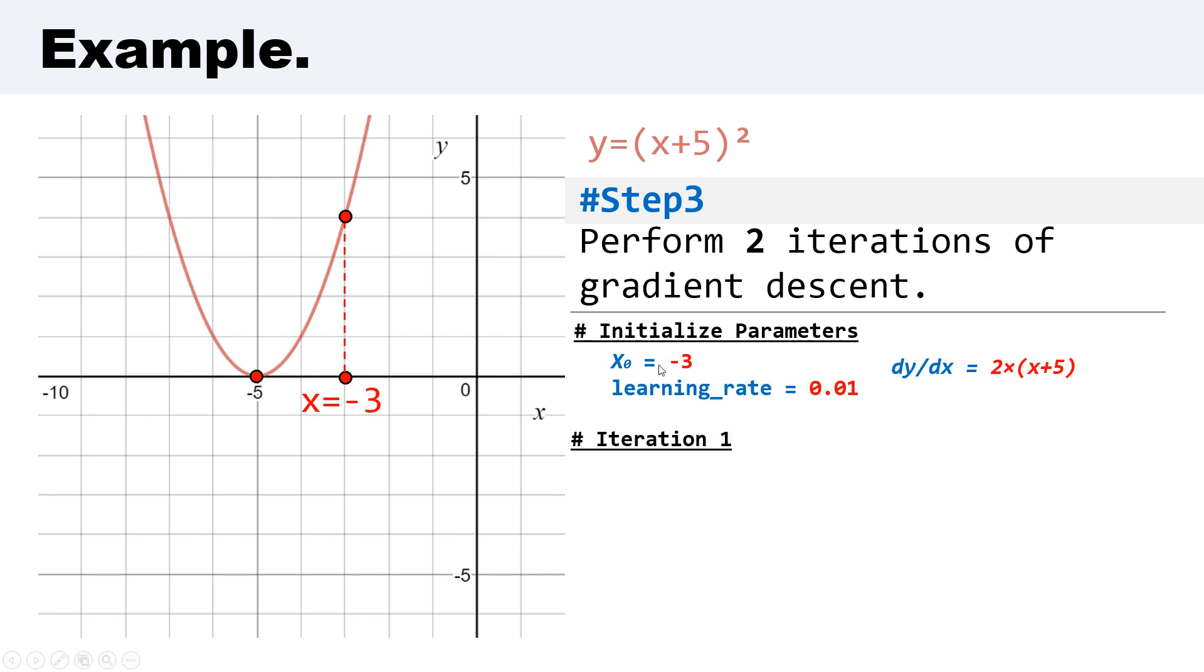We have x₀ equal to -3. We have a gradient function dy/dx = 2×(x+5). And we have learning rate equal to 0.01.